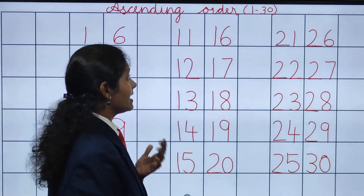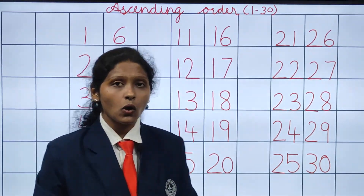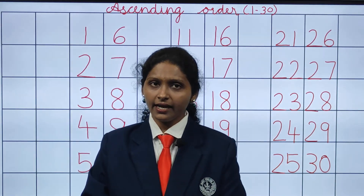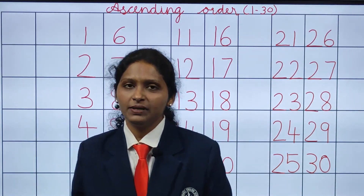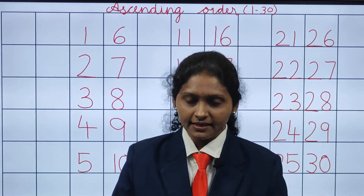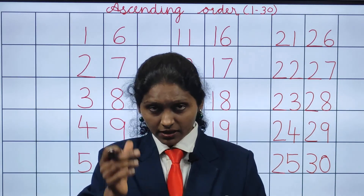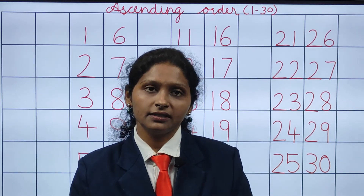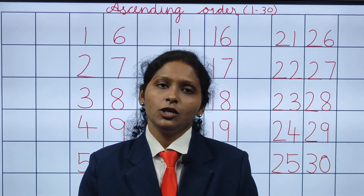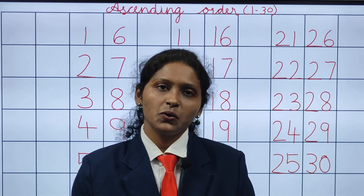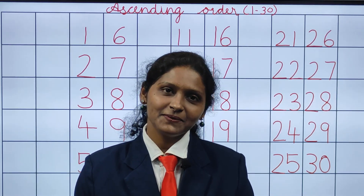So this is ascending order. You please practice this ascending order numbers 1 to 30 in your book at your home. Thank you.